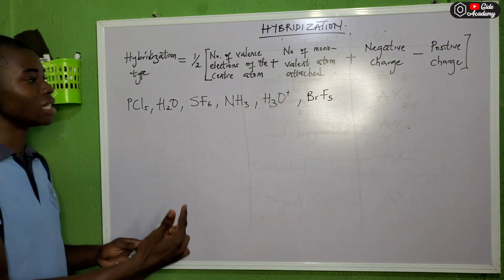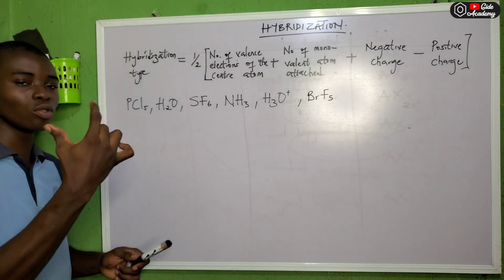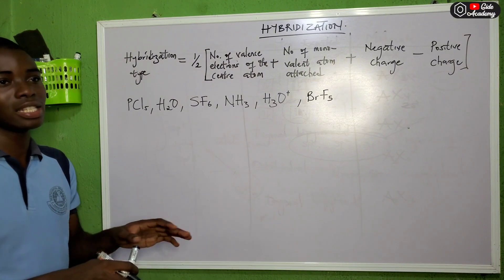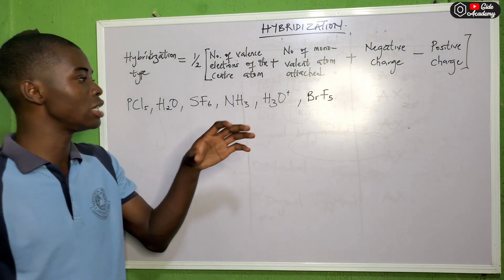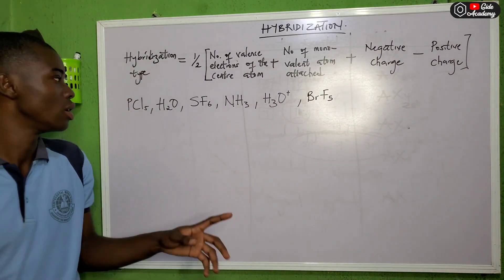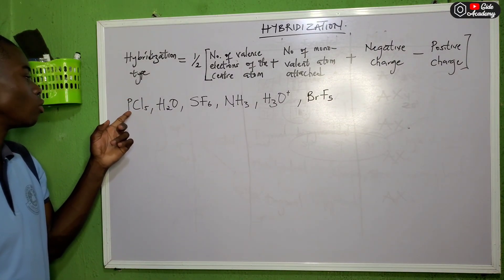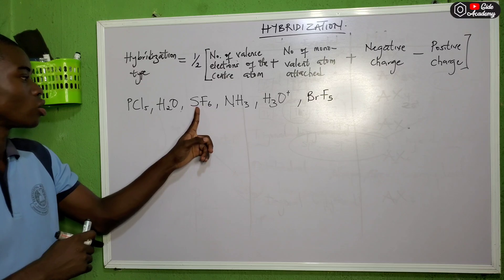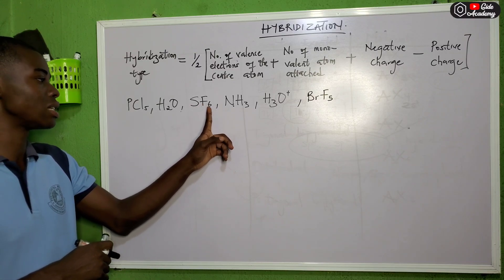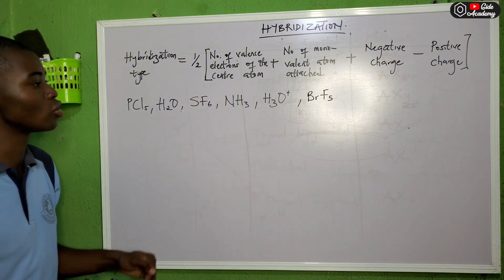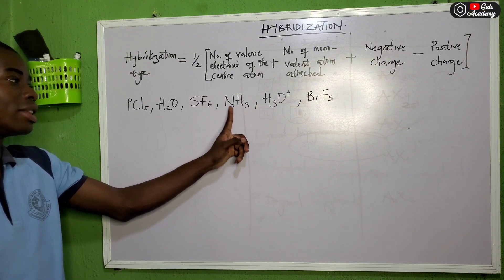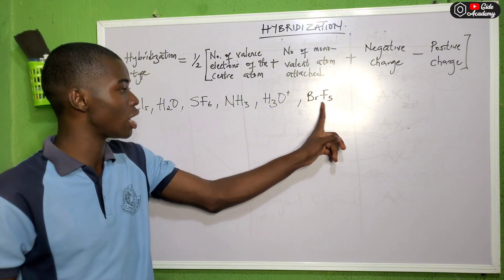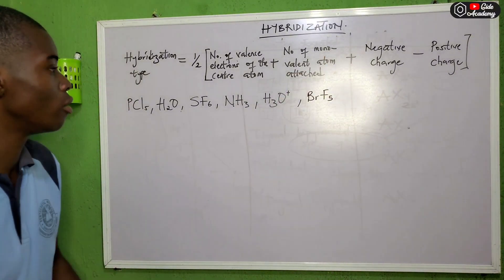To identify the center atom, look for the element with the fewest atoms in the formula — it is the center atom. For example, in PCl5, phosphorus has one atom while chlorine has five, so phosphorus is the center atom. In H2O, oxygen (one atom) is the center atom.